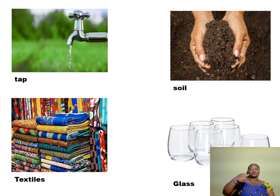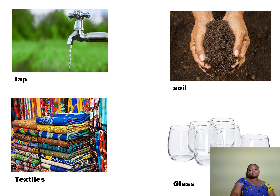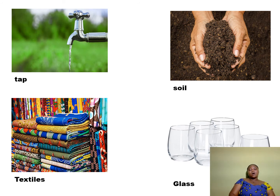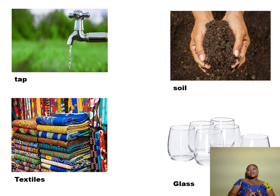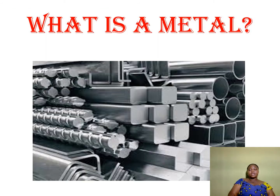We also have soil, textiles, and glass. All these things are examples of materials. So we are going to take them one after the other to know what each of them is.